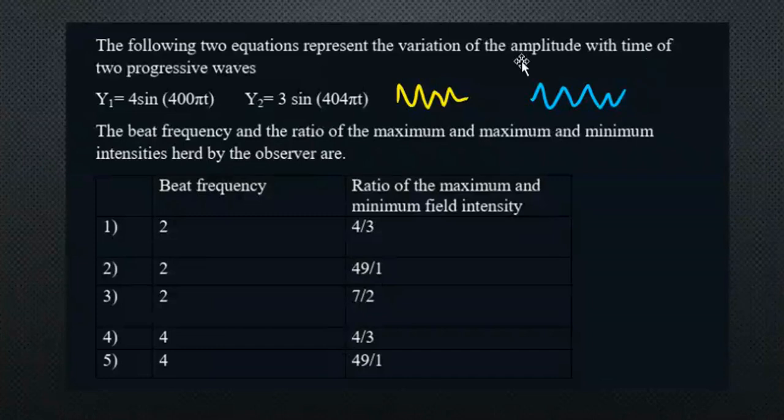Today's question is from waves, specifically beat frequency. You should know a couple of equations to do this question. The question will appear soon — try it first. The question asks you to find the variation of amplitude with time of two progressive waves, then find the beat frequency and the ratio of maximum and minimum intensities heard by the observer.